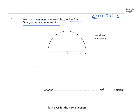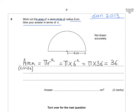The area of a circle is equal to pi r squared, which is equal to pi multiplied by 6 squared, which is equal to pi times 36, or best written as 36 pi.